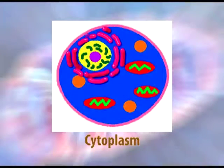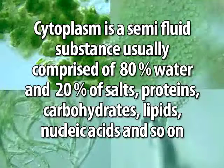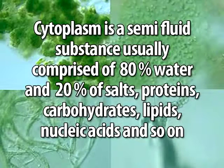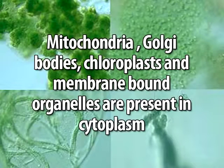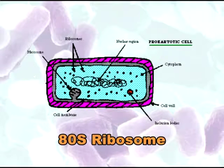The cytoplasm is a semi-fluid substance comprised of 80% or more water and 20% of other things including salts, proteins, carbohydrates, lipids, and nucleic acids. Cytoplasmic streaming is absent in prokaryotes. Mitochondria, Golgi bodies, chloroplasts, and other membrane-bound organelles present in eukaryotic cells are absent in bacteria.